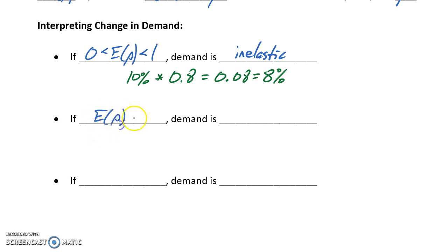If our value for elasticity is greater than 1, we say that demand is elastic. Consider a similar example: a 10% increase in price times an elasticity value of 1.2. That result would be 0.12, or 12%. For a 10% increase in price, we would have a 12% drop in demand. That drop in demand would be larger than our increase in price, so we would actually lose revenue.